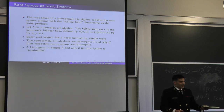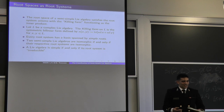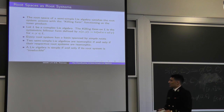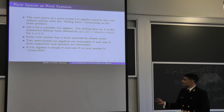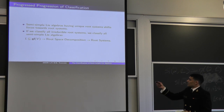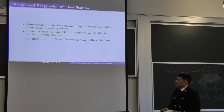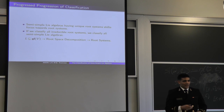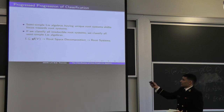It turns out that two semi-simple Lie algebras are isomorphic if and only if their respective root systems are isomorphic. We also have that a Lie algebra is simple if and only if its root system is irreducible — meaning it cannot be represented as a disjoint union of two mutually perpendicular root systems. So our classification progression is: semi-simple Lie algebras have unique root systems, simple Lie algebras correspond to irreducible root systems, and if we can classify all irreducible root systems we can classify all simple and in turn all semi-simple Lie algebras. We move from sub-algebras of gl(L) to the root space decomposition to root systems and irreducible root systems.